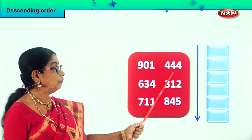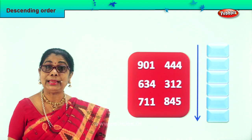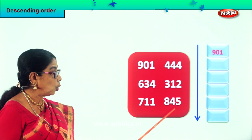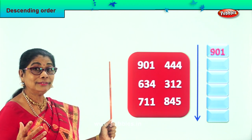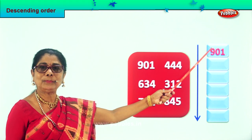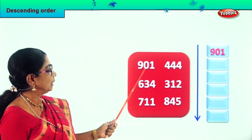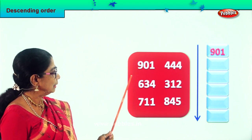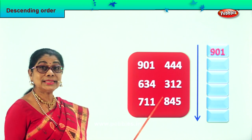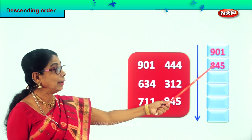Eight hundred, three hundred, four hundred, seven hundred, six hundred, nine hundred. Certainly, nine hundred one is the biggest among all. So we will pick this number and put it right on the top. We identified the biggest number. The next smaller number — after nine comes eight — so let's pick eight hundred forty-five and put it over here.